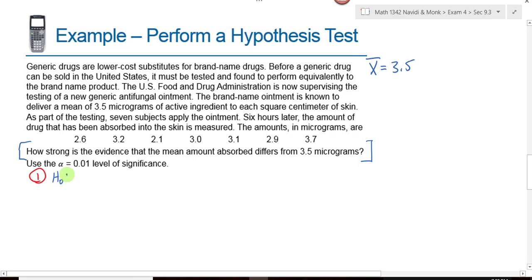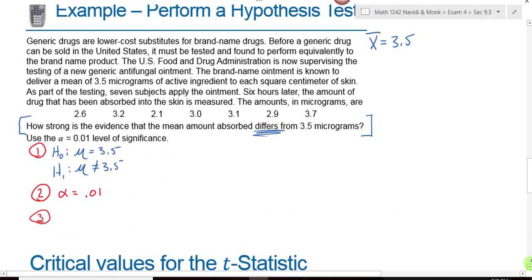My first step is to write my null and my alternative hypothesis. My null hypothesis is going to be what? Perfect. My alternative. And why did you choose not equal to? The word differs. That means not equal to. We're getting it. So will this be a left tail, right tail, or two tail test? Two tail. Y'all are getting it. So alpha is equal to what for this problem? Point zero one. Well, that's what we're going to use. Step three is to draw a picture.